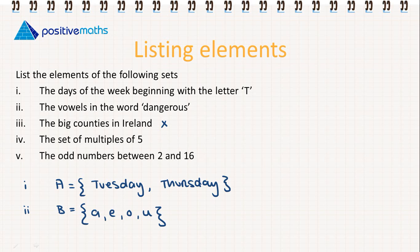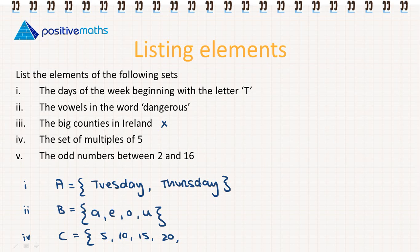Part four: the list of multiples of five. So we're going to start off with 5, 10, 15, 20... The multiples of five continue to infinity, so we're going to put three dots at the end to suggest this.